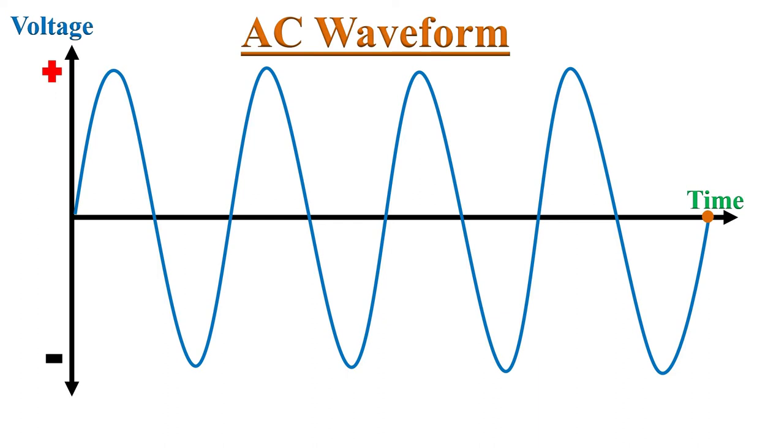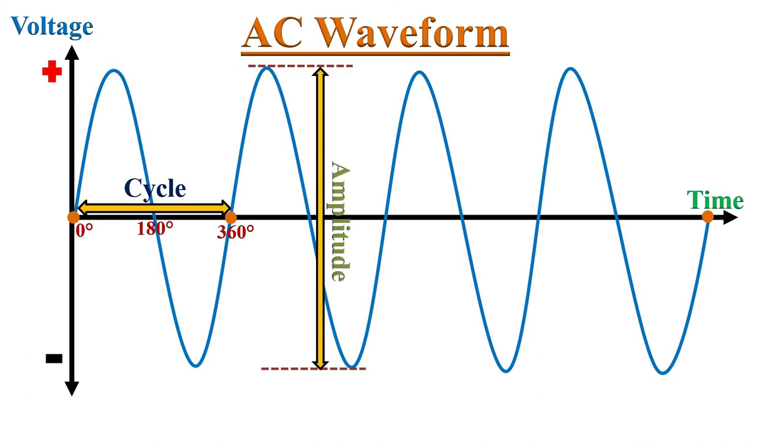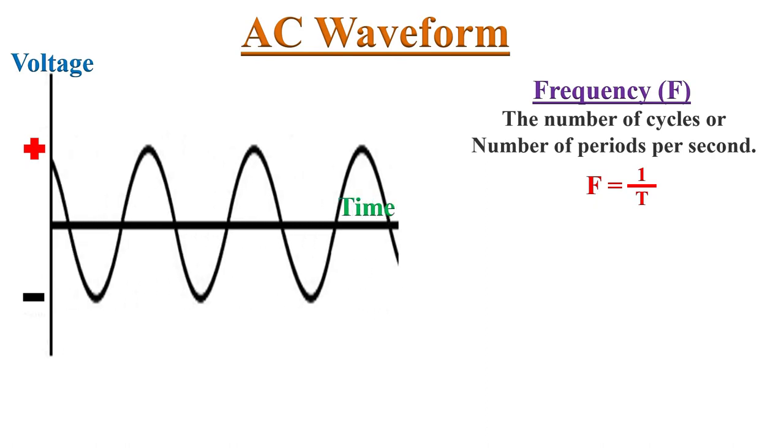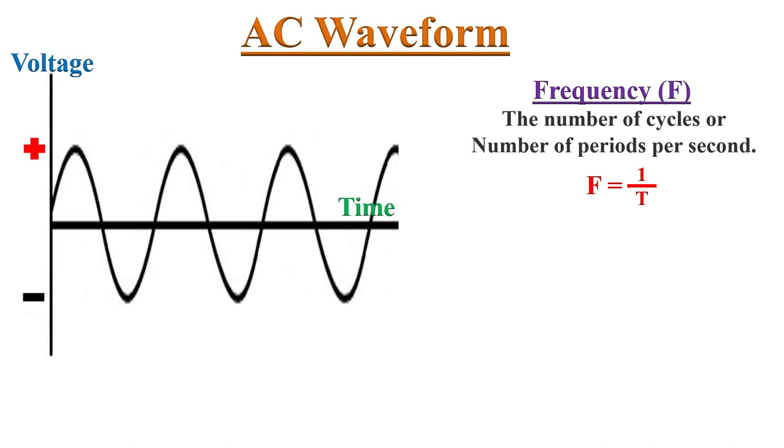Now, let's understand a few key terms in AC waveform. A sinusoidal wave has completes positive half from 0 to 180 degrees and completes negative half from 180 degrees to 360 degrees. The combination of both positive and negative half cycles is called one cycle. The combined measurement of maximum values in both positive and negative half cycles are called amplitude of that sine wave. The time taken to complete one cycle is called time period of that wave. The number of cycles or number of time periods per second is called frequency of that waveform.